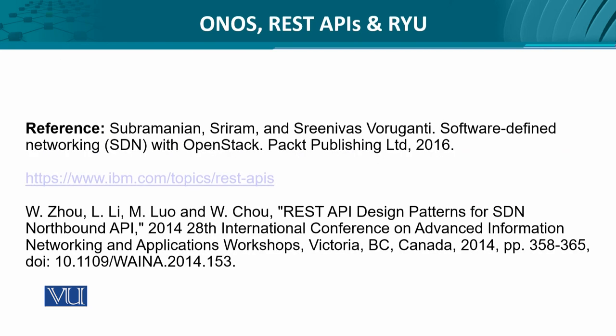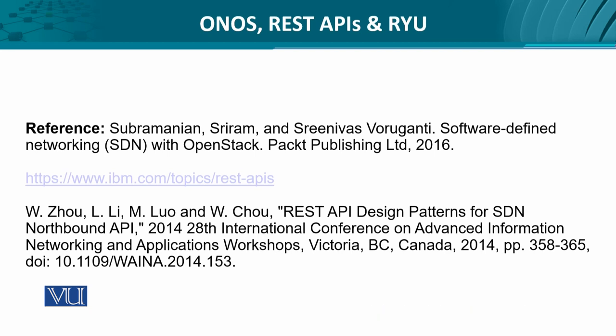The primary resource is the book Software Defined Networking with OpenStack by Packet Publishing. Additional references include an IBM URL providing insight into REST APIs and an interesting paper on REST API design for SDN northbound APIs.